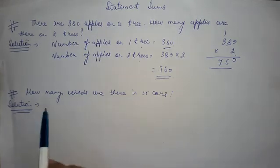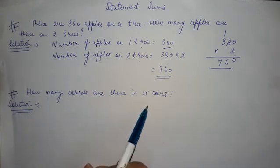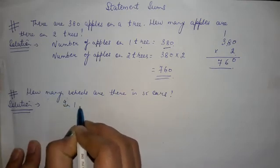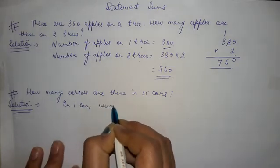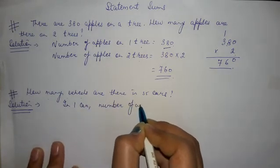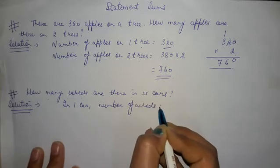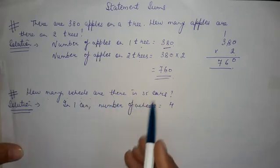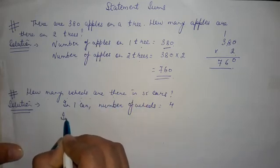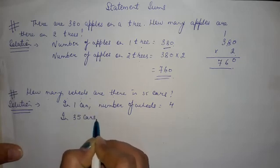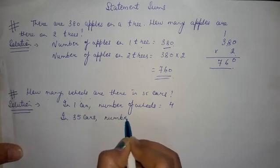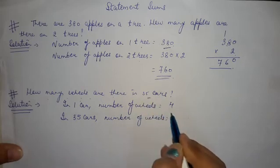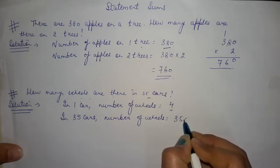Next is how many wheels are there in 35 cars? So as you know in one car, how many wheels are there in one car? There are 4 wheels. So we need to find how many wheels are there in 35 cars. So we will write in 35 cars, number of wheels equals to 35 multiply by 4.